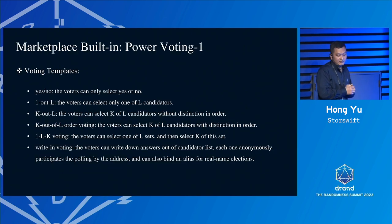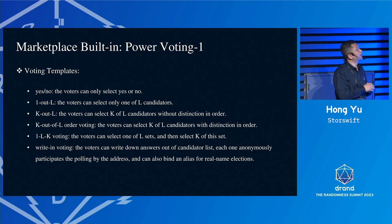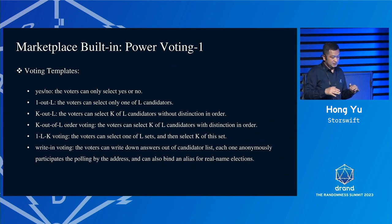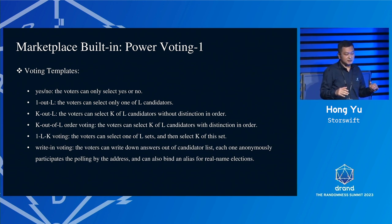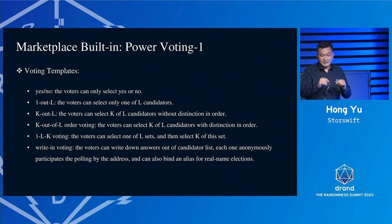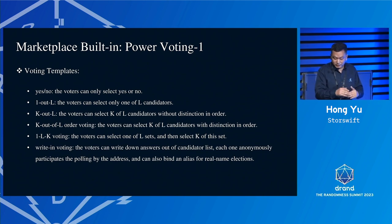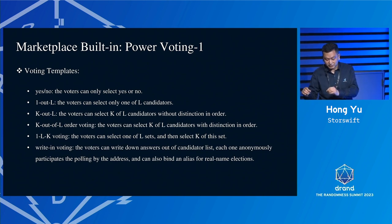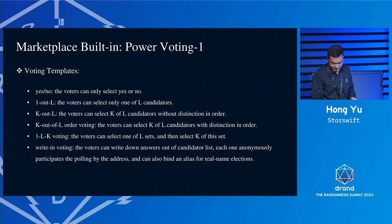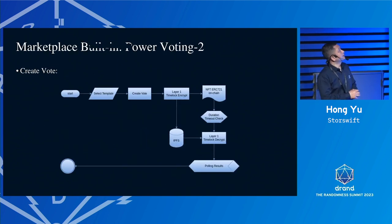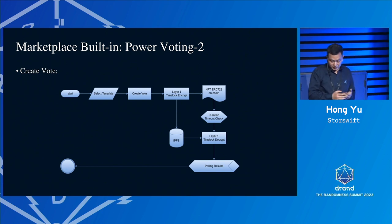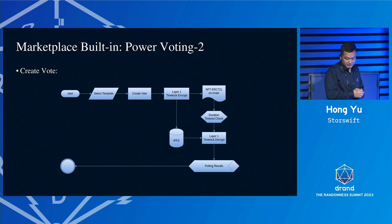From the student's side, it's the opposite workflow — they get the NFT, get the info, decrypt the data, start the test, upload the result, and then the system checks all the results. We also provide a power voting template, where users only need to take the component from the template and drag it into the workflow to build their DApp. It's a simple logic for power voting.